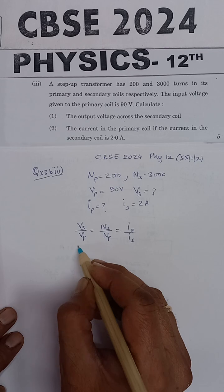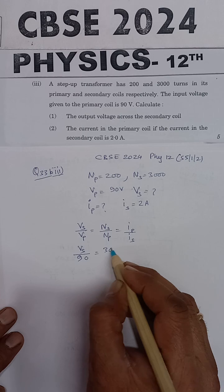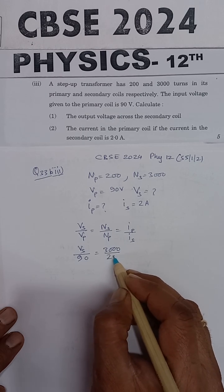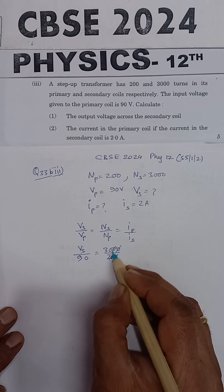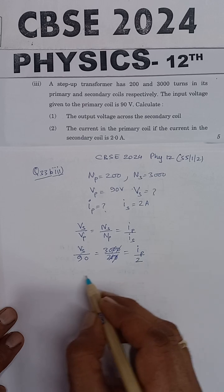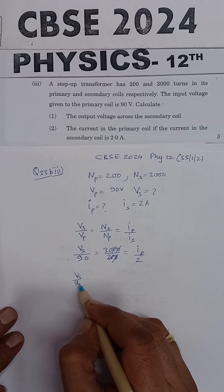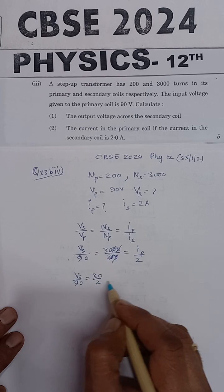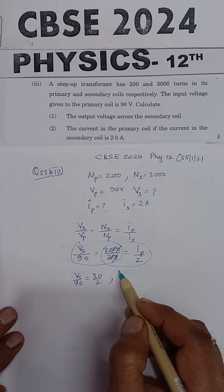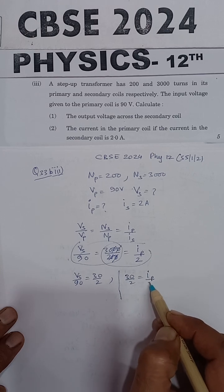We need to calculate Vs. Vp is 90, Ns is 3000, and Np is 200 — the two zeros cancel. So Vs upon 90 is equal to 30 divided by 2, which also equals Ip divided by Is, where Is is 2 amperes.